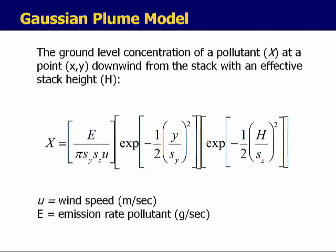The equation representing this model gives Big X as the ground-level concentration of a pollutant at a given point (x, y) downwind from the stack of effective height H. The equation includes E, the emission rate of the pollutant; mu, the wind speed at the location; the coordinate y; and the standard deviation terms S of Y and S of Z. To solve the equation, you need to find S of Y and S of Z, which come from nested equations that are a function of atmospheric stability.